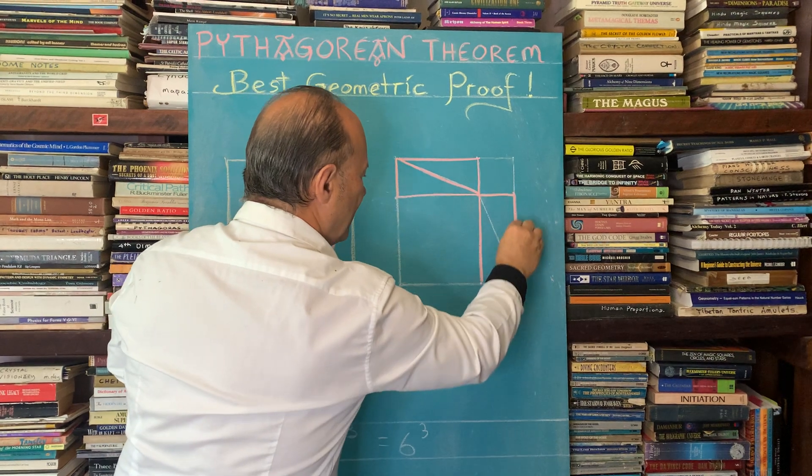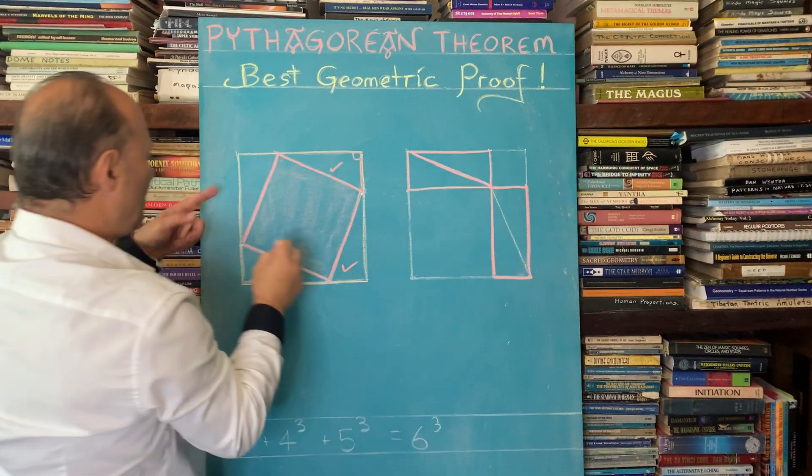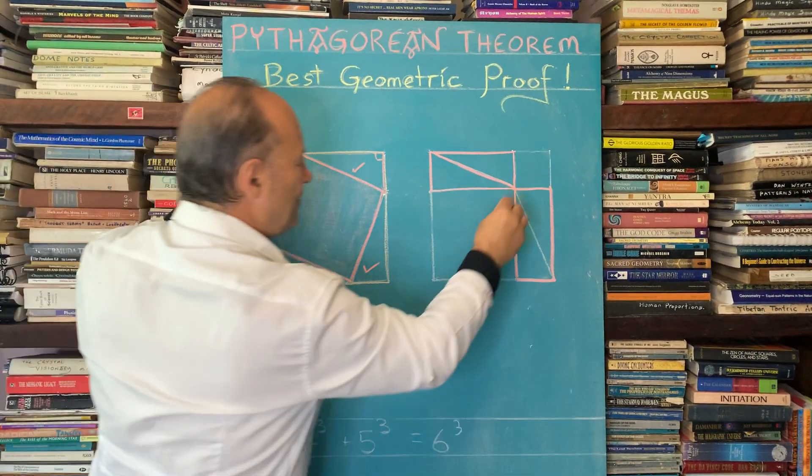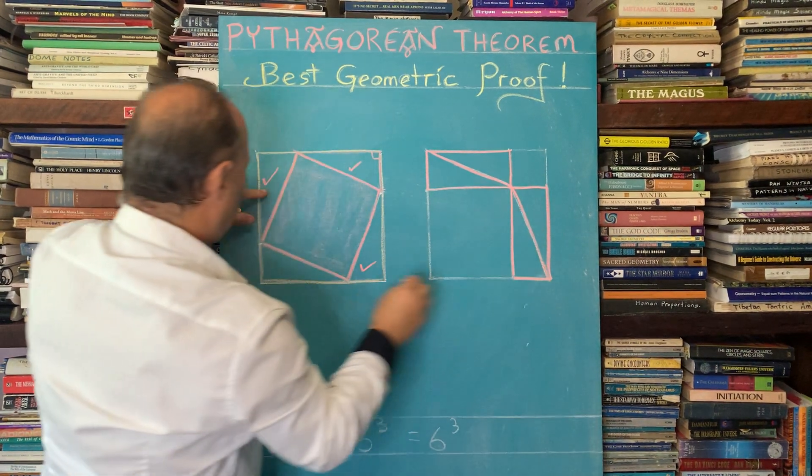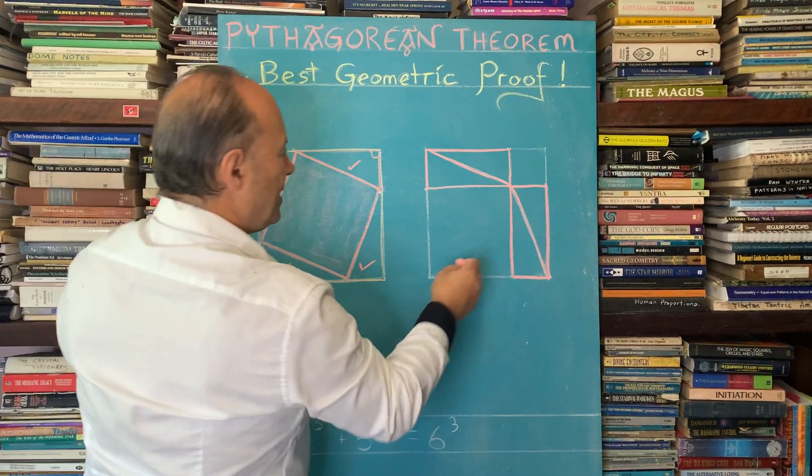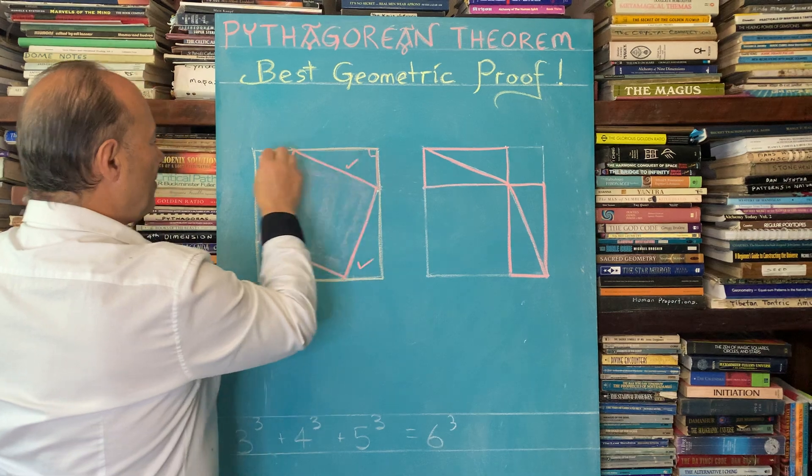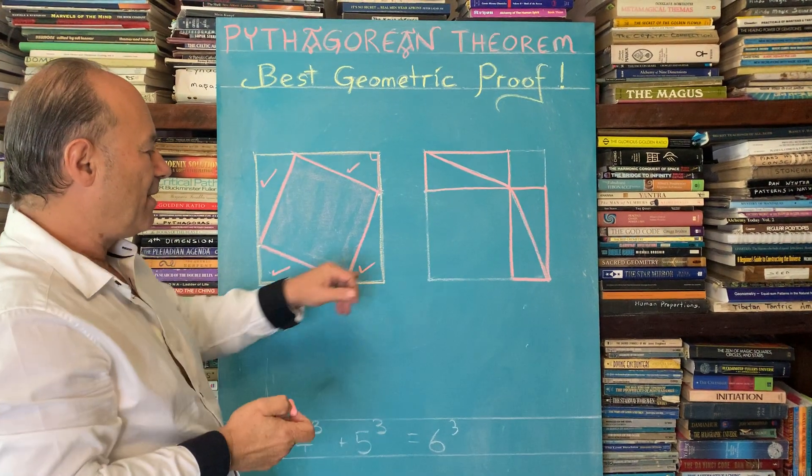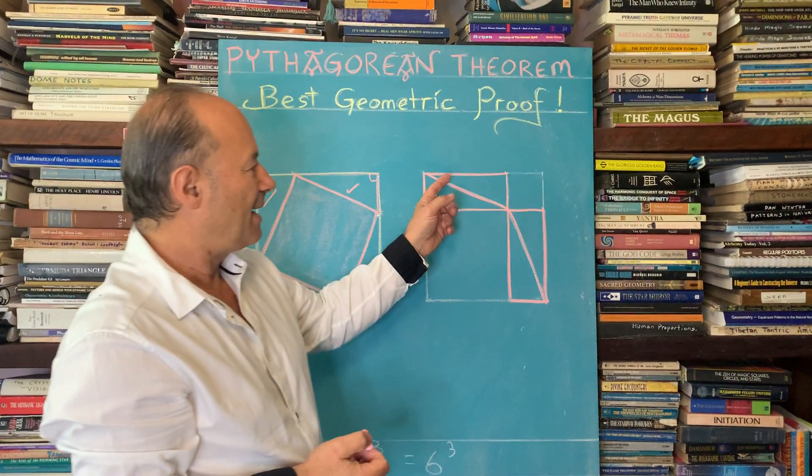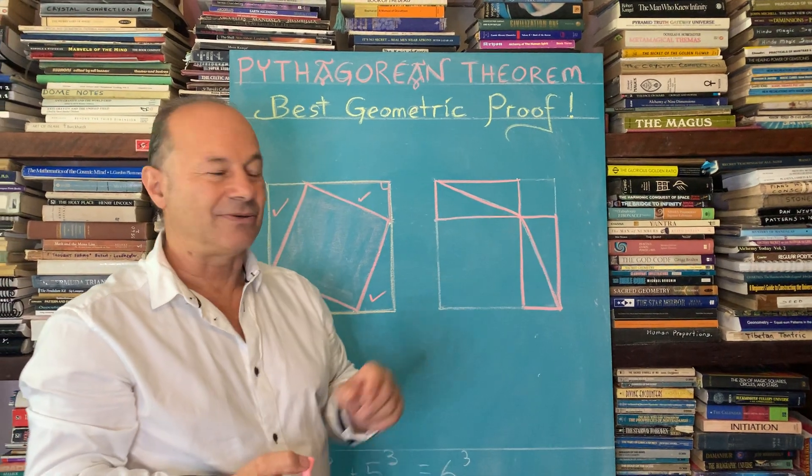So this rectangle over here is the combination of this one here and this one here. So the area of these four elongated right triangles are the sum of these two rectangles.